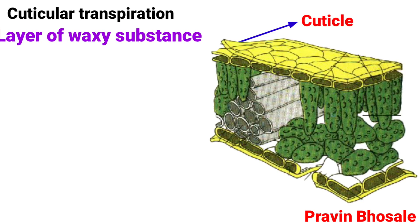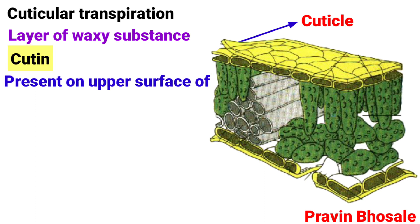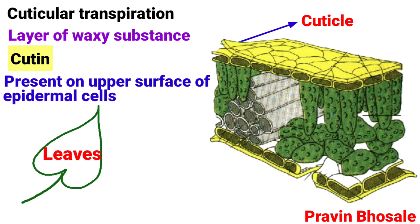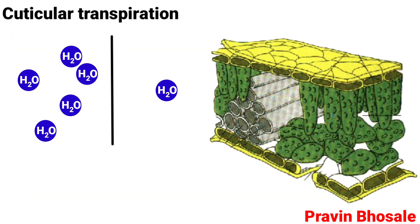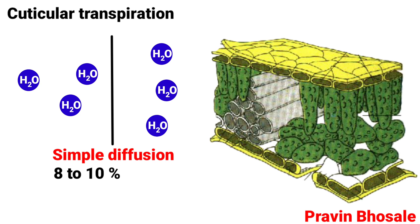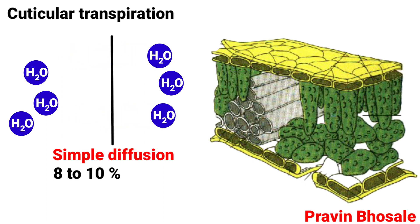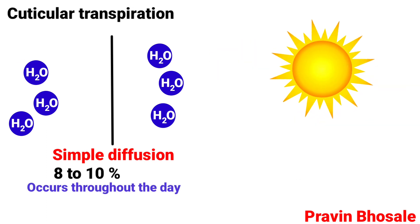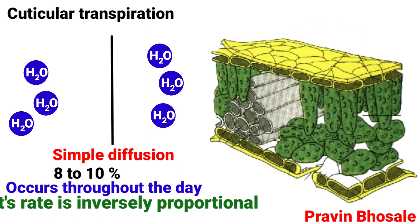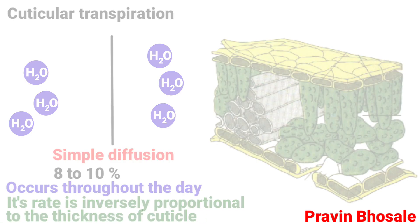Cuticular transpiration: the cuticle is a layer of waxy substance called cutin, present on the upper surface of epidermal cells of leaves and stem. Cuticular transpiration occurs by simple diffusion and contributes 8–10% of total transpiration. It occurs throughout the day and its rate is inversely proportional to the thickness of the cuticle.